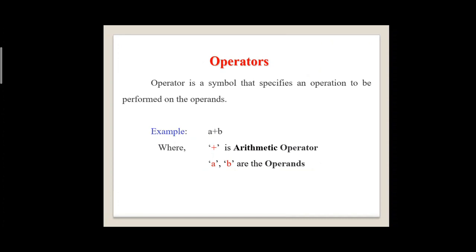First, what is meant by operator and what are the types of operators? An operator is a symbol that is used to perform some mathematical operations or logical operations. Take one example: A plus B. Here, plus is an arithmetic operator, and A and B are the operands. The plus operator is used to add the values of the variables A and B.